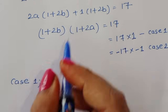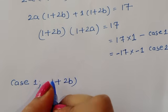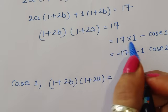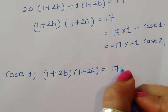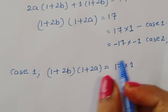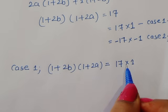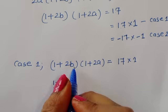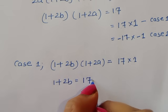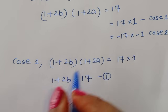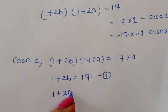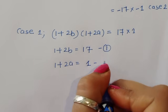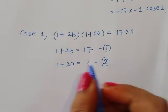In Case 1: (1 + 2b)(1 + 2a) = 17 × 1. Comparing LHS and RHS, we get two equations: equation 1 is 1 + 2b = 17, and equation 2 is 1 + 2a = 1.